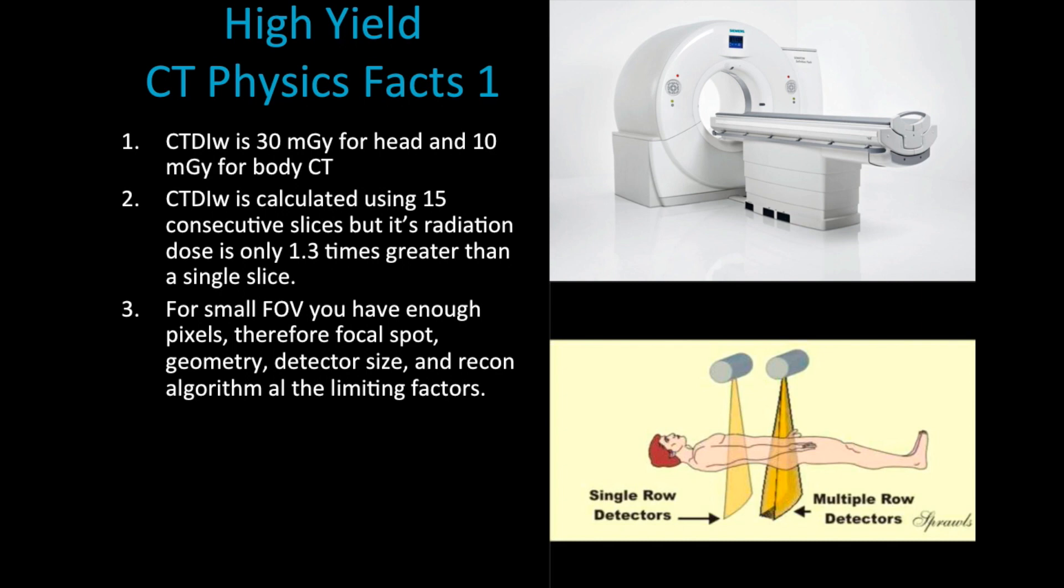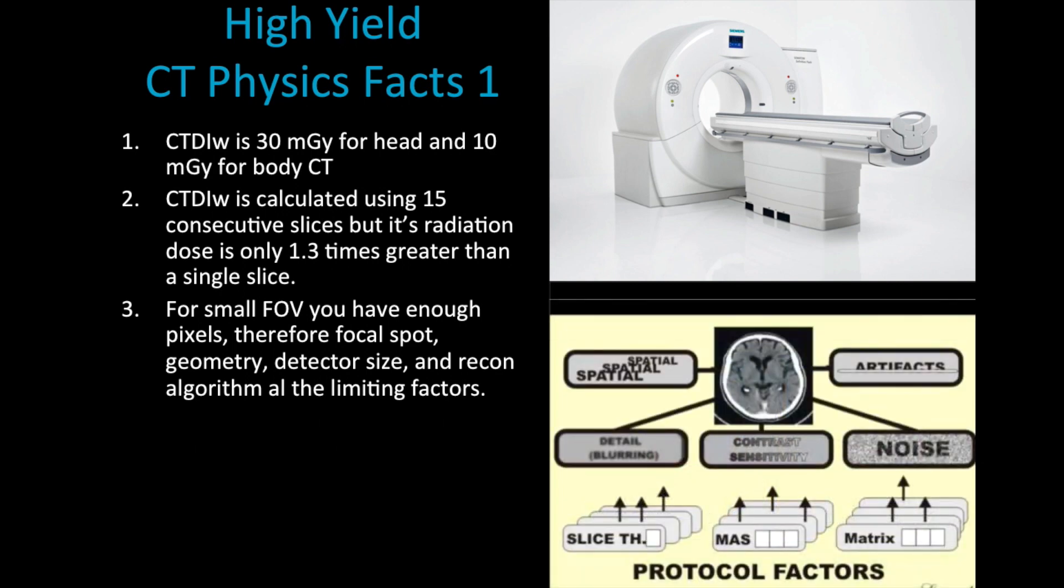For low contrast discrimination in CT, it is really affected by CT noise. We should know that CT is known for its contrast resolution, not for its spatial resolution. So it is really important for us to know what changes CT noise and low contrast resolution.